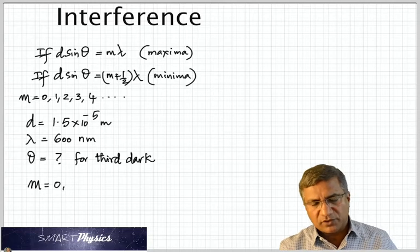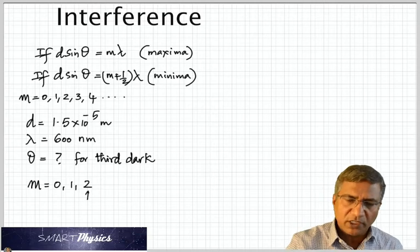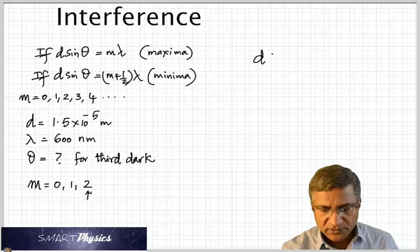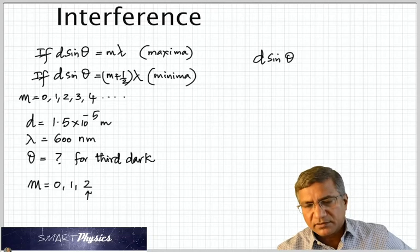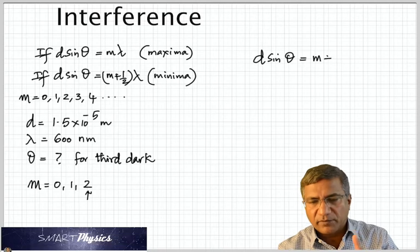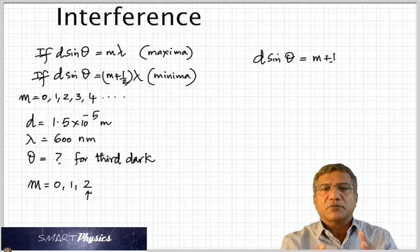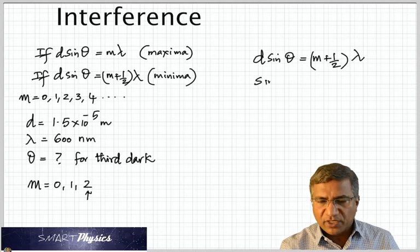So we're looking for the third. So M can take 0, 1, 2, 3. And we go to D sin theta is M plus half lambda. Because we're talking about dark bands.